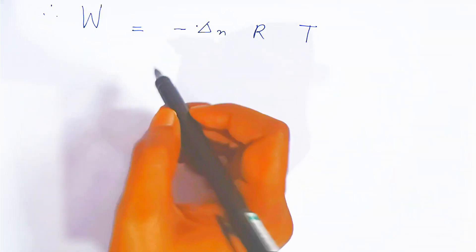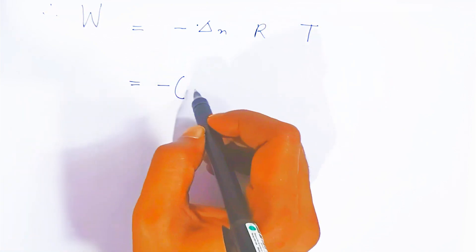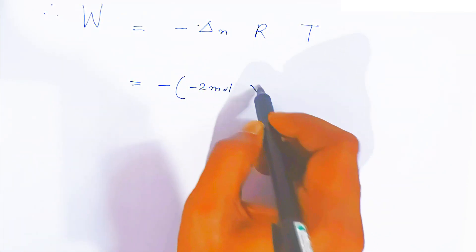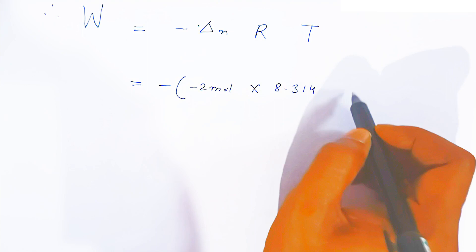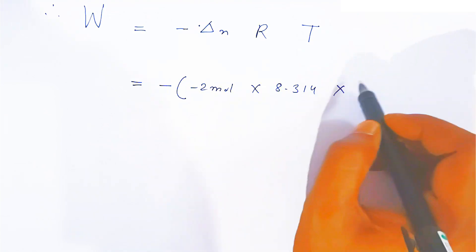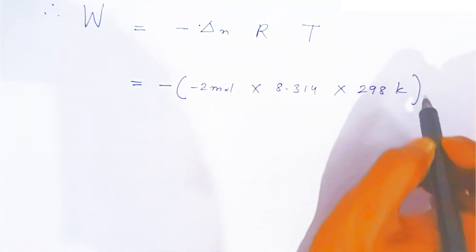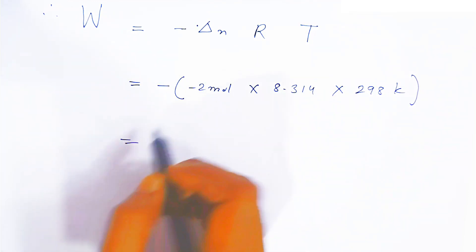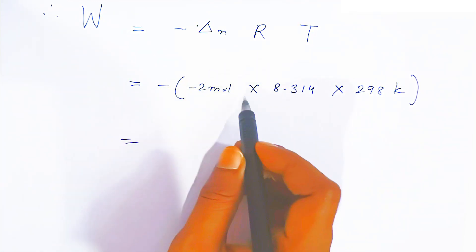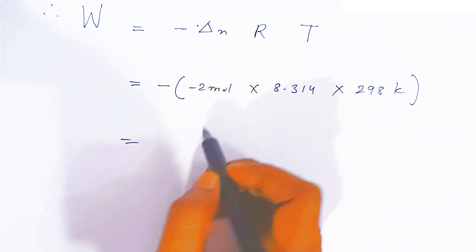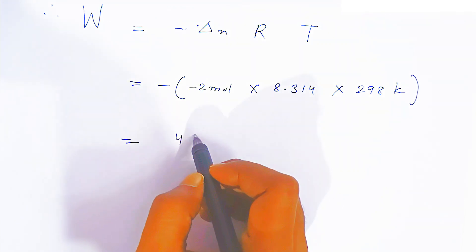The formula for work done is W = −ΔnRT. Substituting values: W = −(−2) × 8.314 × 298 K (since 25°C = 298 K). The two negatives make it positive.